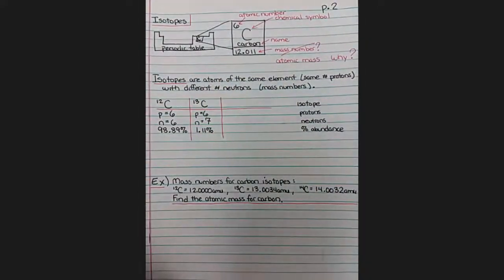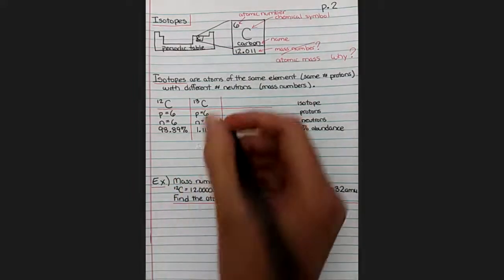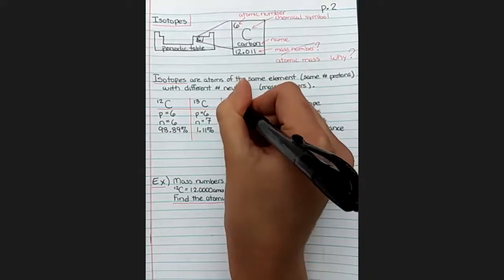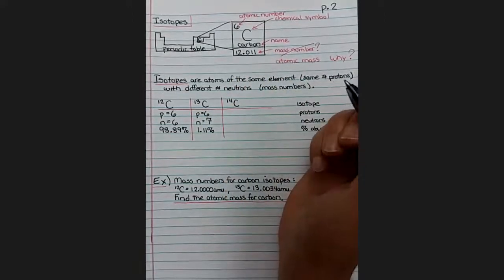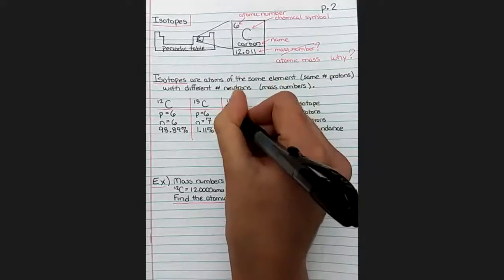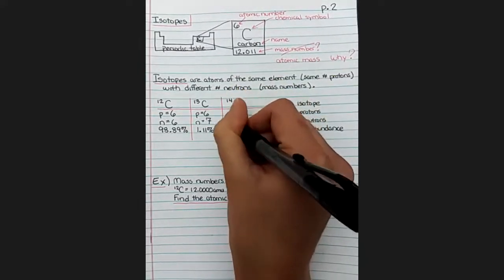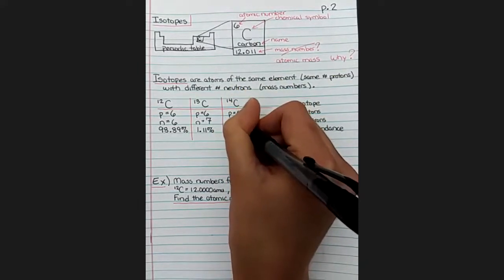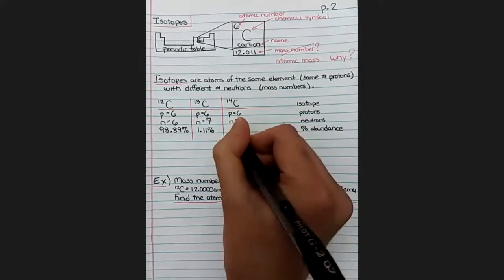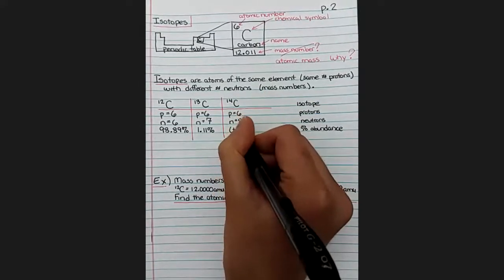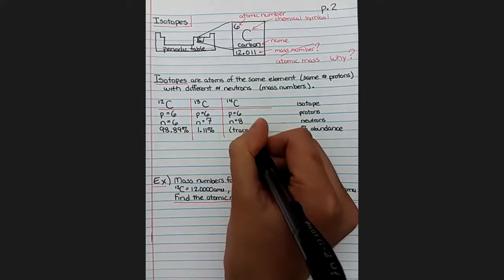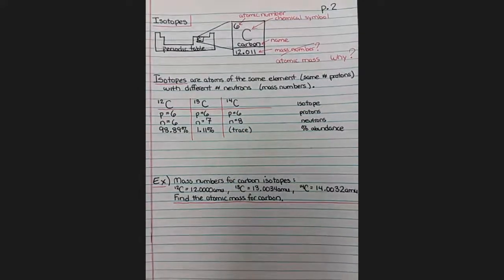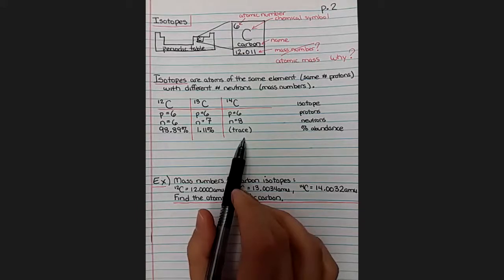So those are essentially the only kinds of carbons that are found naturally. There are other isotopes of carbon. One other isotope of carbon that we sometimes generate in the laboratory is called carbon-14, which has six protons, eight neutrons, but it doesn't exist in very high numbers naturally. So we'll just say it's trace amounts, which is code for basically zero.